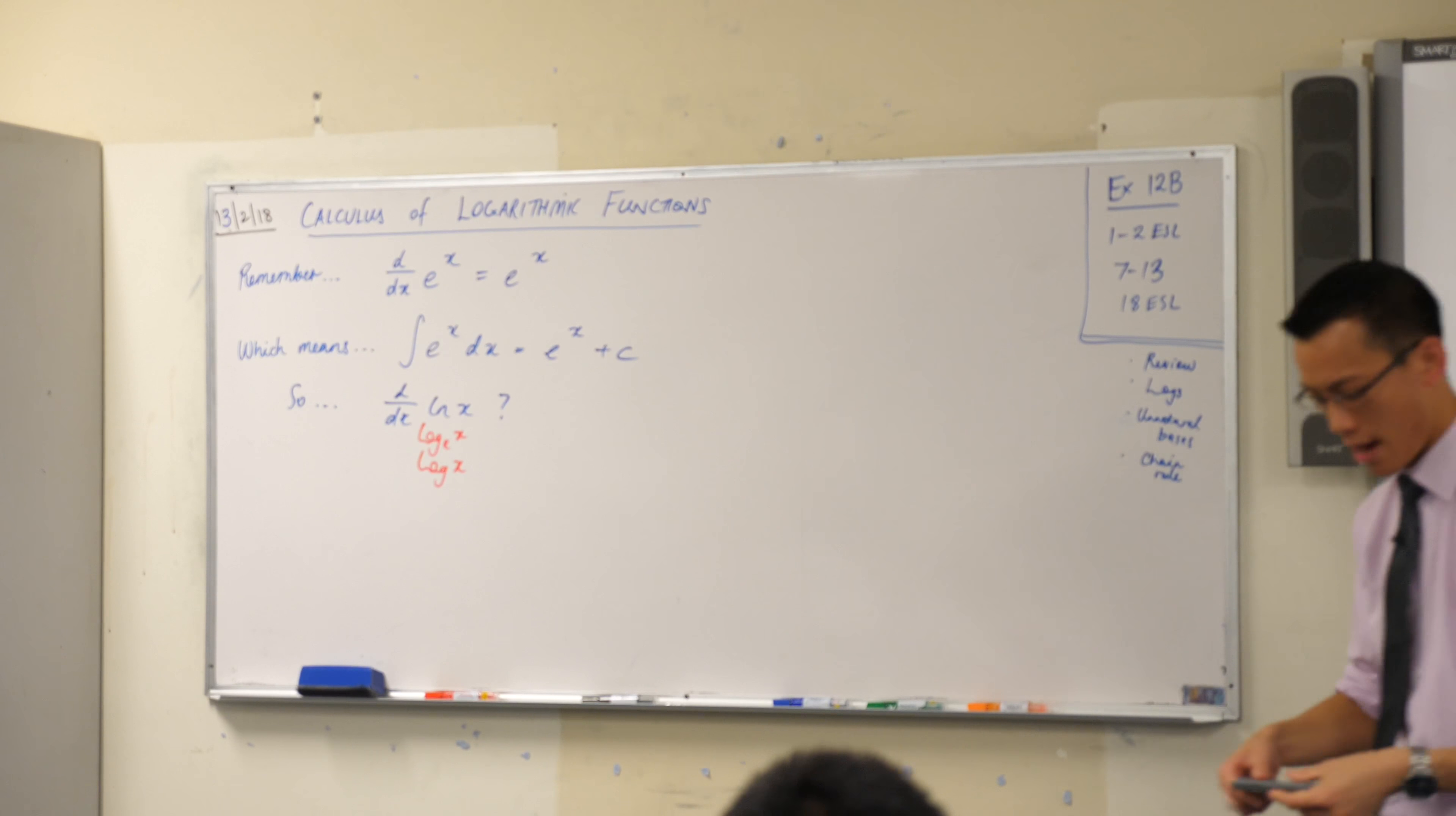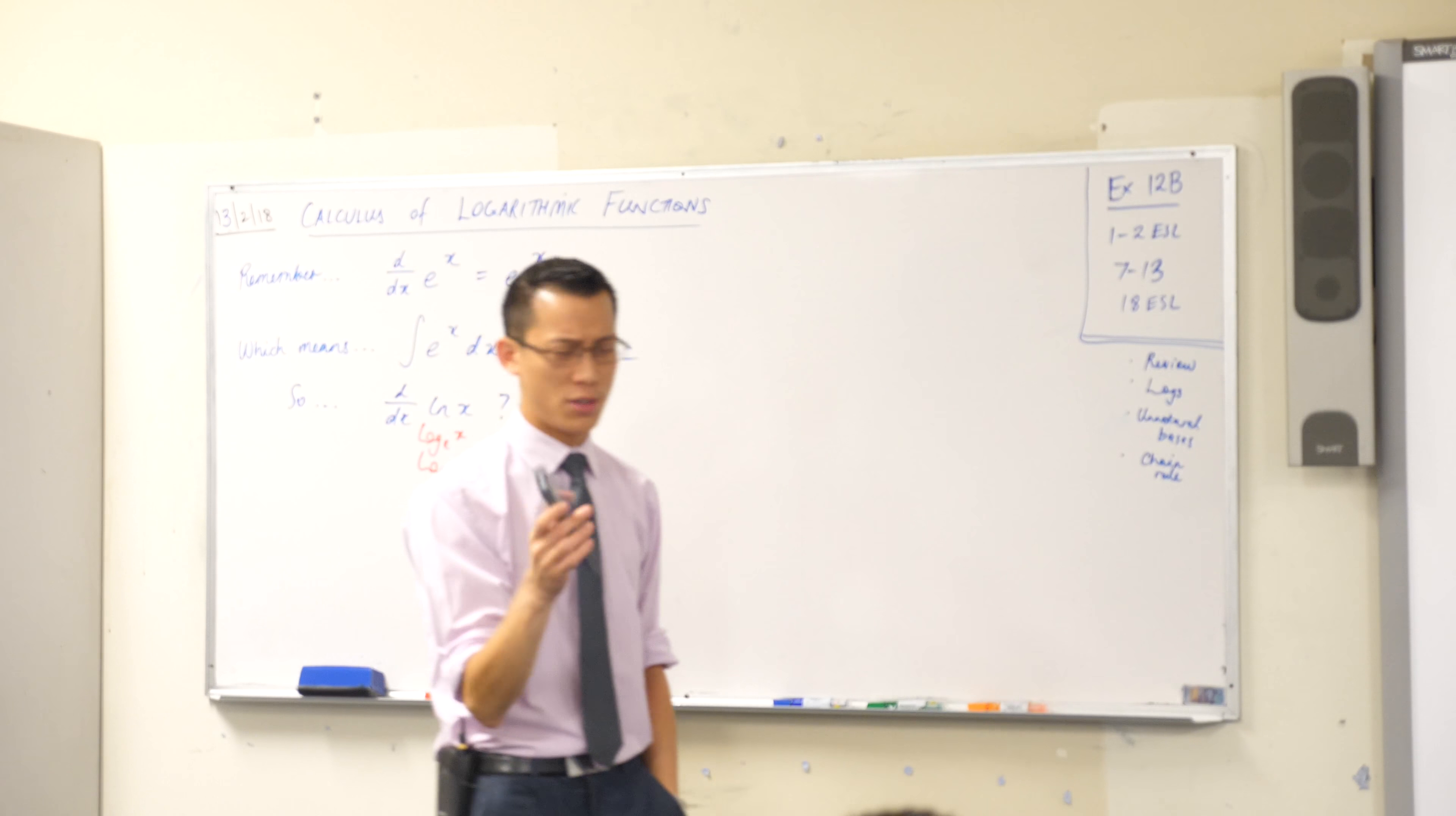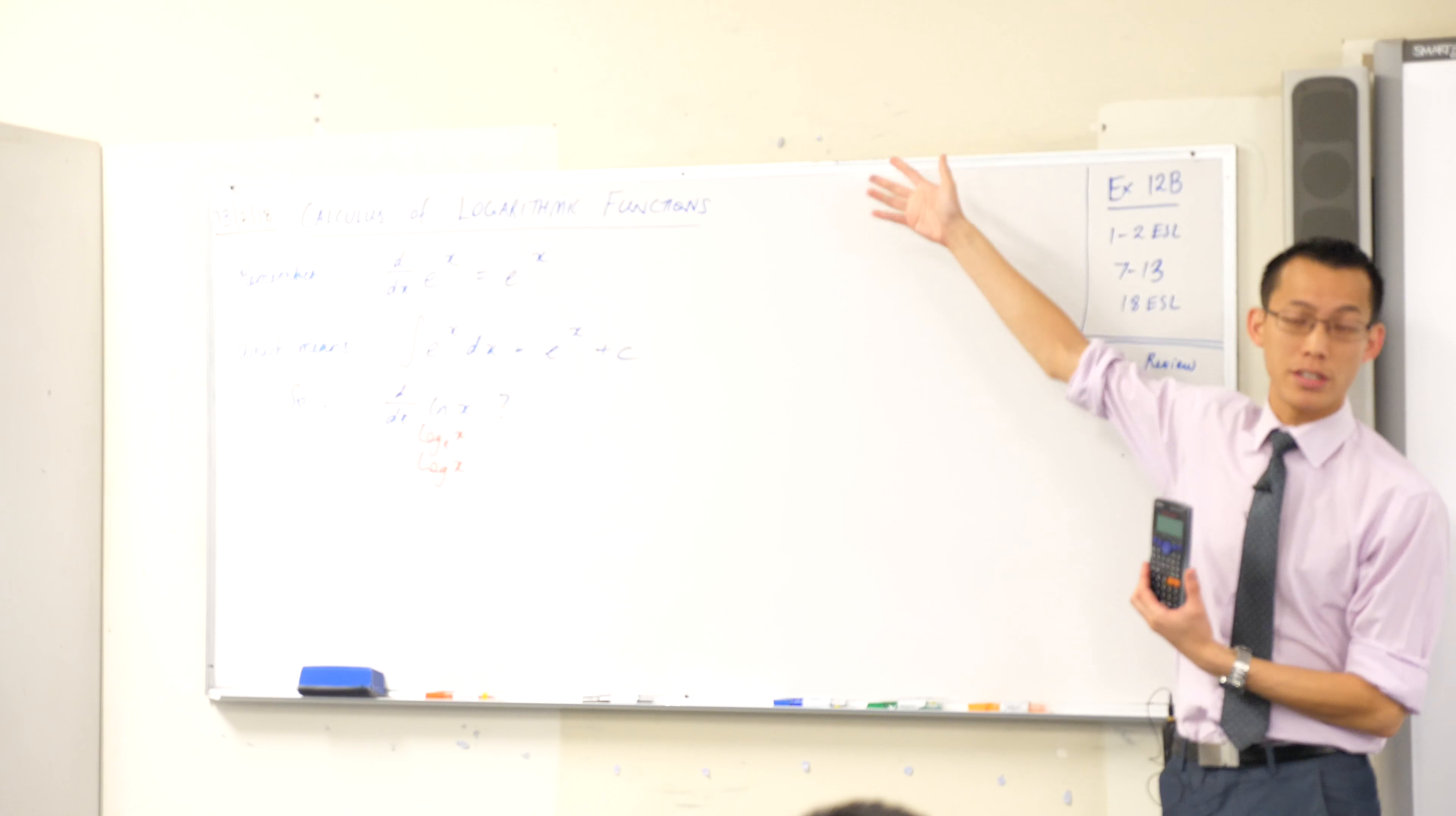Now, this is what I mean by not great. Your calculator has two log buttons. Two log buttons. One says Ln, so that's completely unambiguous. We know what that means. The n stands for natural, it's base e.